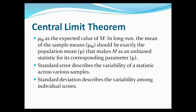Going back to the slide — in the long run, the mean of the sample means should be exactly the population mean. If you take all these different samples and get larger and larger samples, with more and more information, you should be able to have an unbiased estimate of mu. Therefore, you can use the standard error to adjust for the mean and have an unbiased statistic corresponding to the parameter.